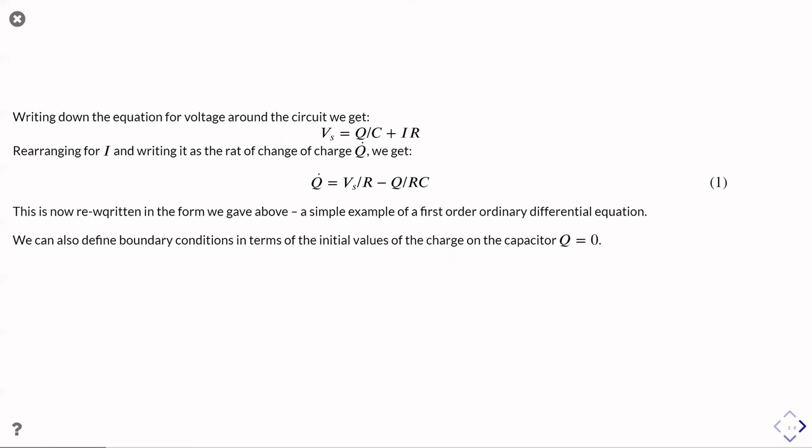We also then realize that current is just the rate of change of charge, and so we can replace our I with dQ/dt or Q dot, and we can rearrange it and we end up with an equation Q dot equals V_s over R minus charge Q over RC. So that's now got it into that form that we showed you earlier, of a time differential is equal to some function of, well time doesn't actually feature in this equation at this point, but the state variable, the charge, does feature.